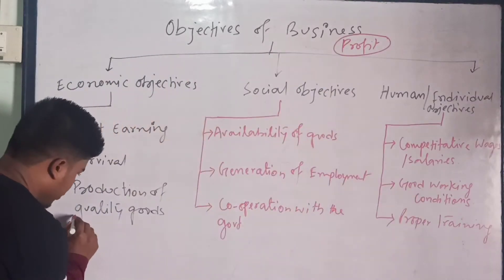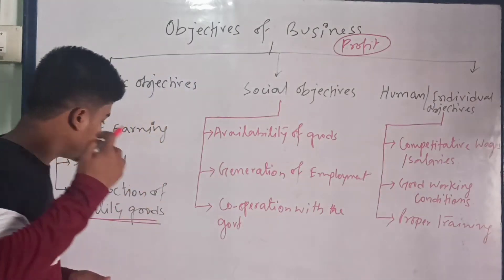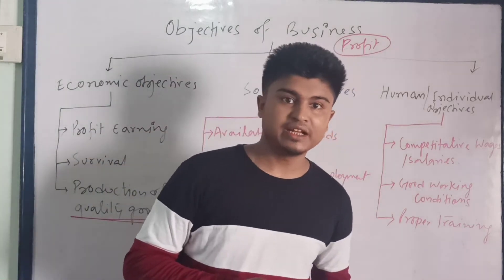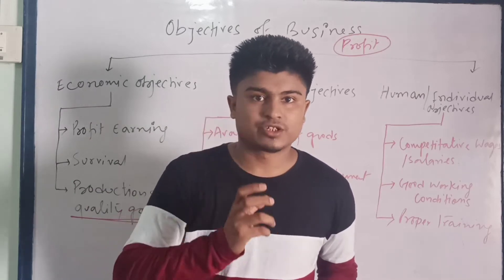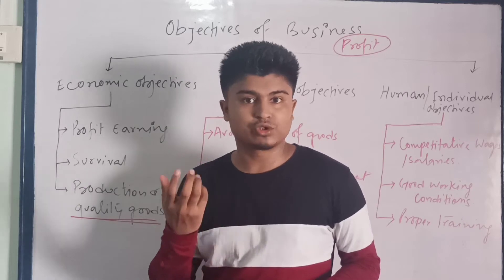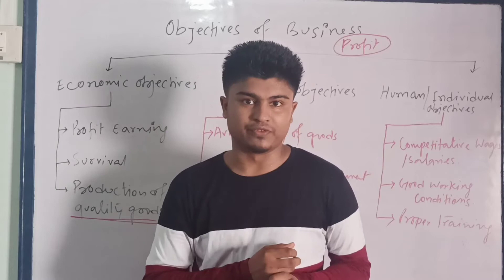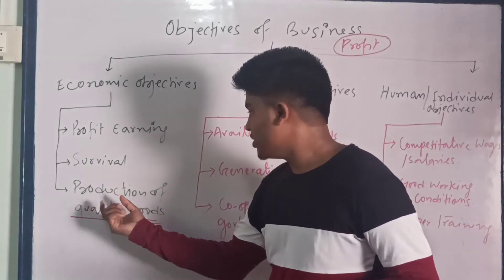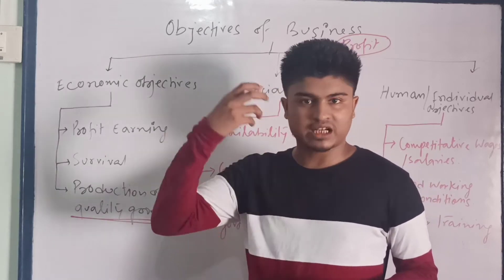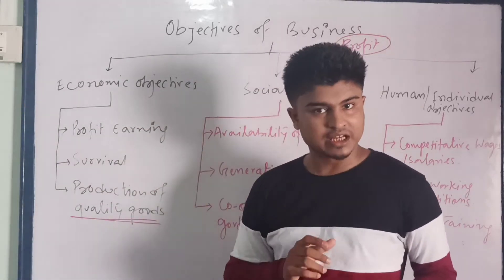The third economic objective is production of quality goods. Producing quality goods also incurs cost, and when we have a sufficient amount of profit, we can give our best in order to produce quality goods. So in order to produce or provide quality goods to customers, we should keep our eye on achieving economic objectives.